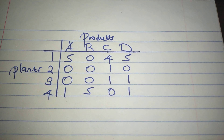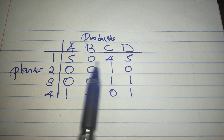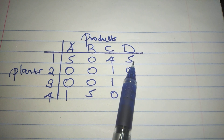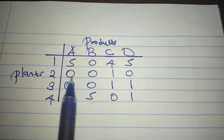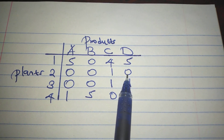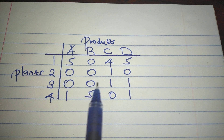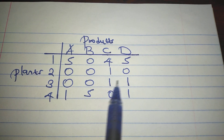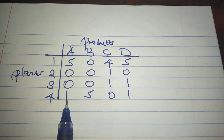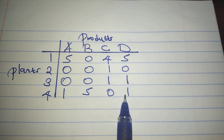So that operation gives us the reduced cost matrix: row one: 5, 0, 4, 5; row two: 0, 0, 1, 0; row three: 0, 0, 1, 1; row four: 1, 5, 0, 1.